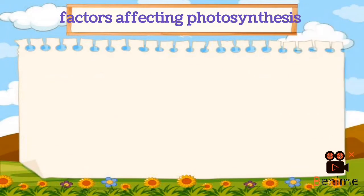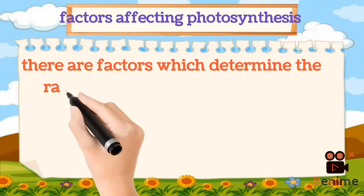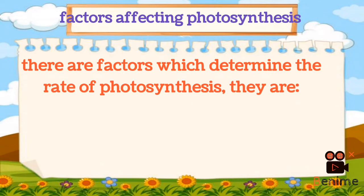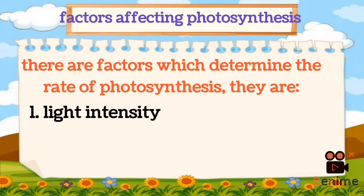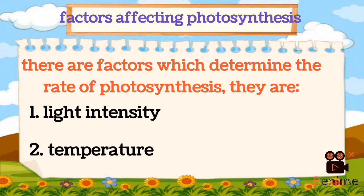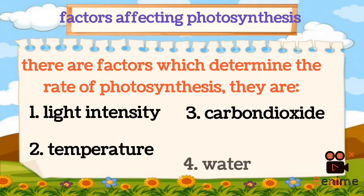Factors affecting the rate of photosynthesis. The factors are: light intensity, temperature, carbon dioxide, and water.